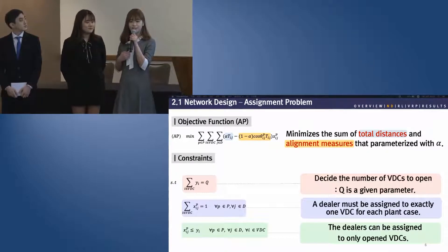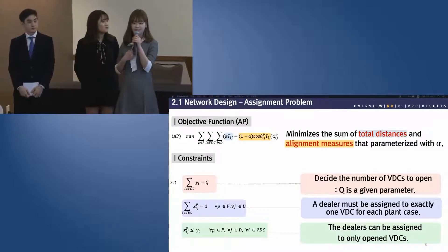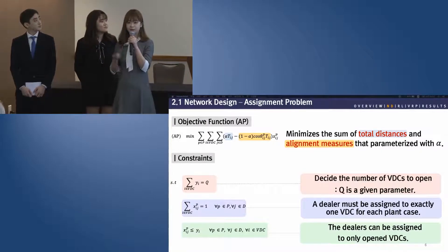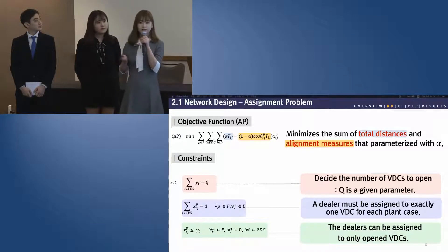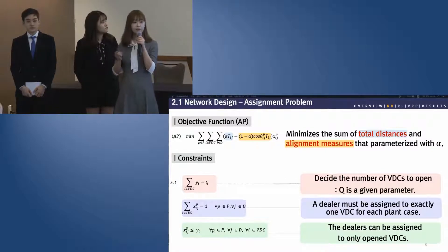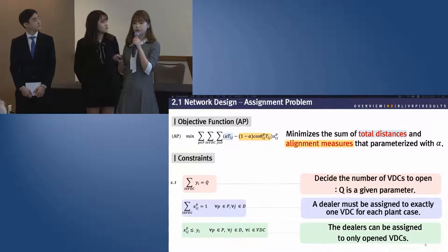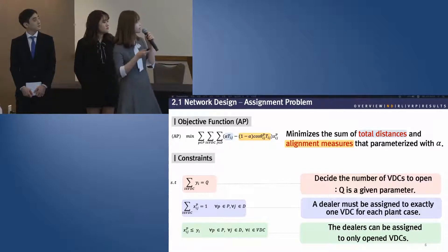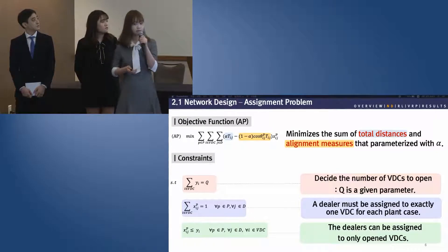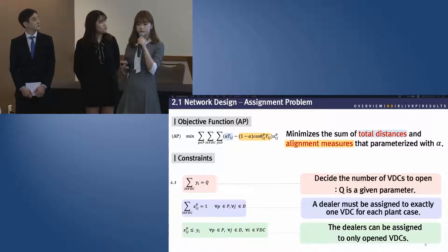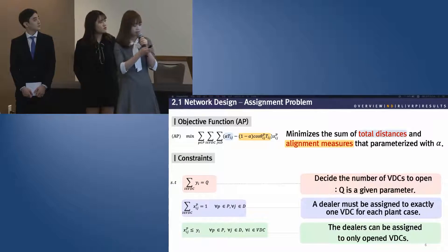Hi, my name is Moon Jung. It is a great pleasure to be here today. I will be presenting about network design, which is the first component of our algorithm. We divided this problem into two parts. The first one is the assignment problem. The main purpose is to reduce the transportation cost by picking a proper VDC for the dealer. The linear constraints are as follows: Q is a given parameter to decide the number of VDCs, and alpha is a value to control the trade-off between distance and alignment.